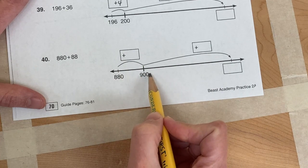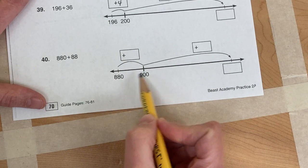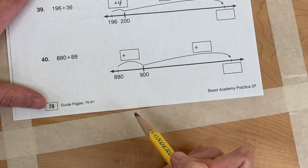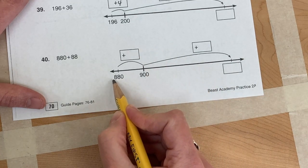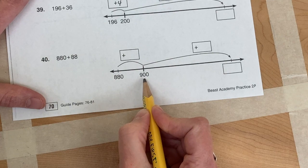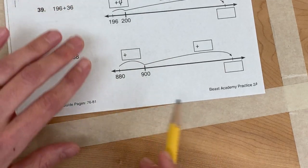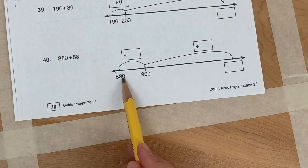Whatever that answer is, you could think of it like 900 minus 880. Or you could think, how many more do I have to add to 880 to reach 900? And you can kind of think about it like, if you have 80...